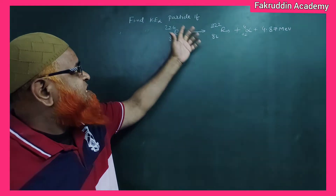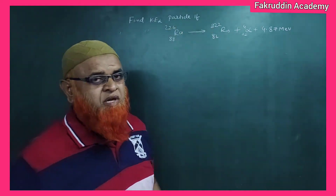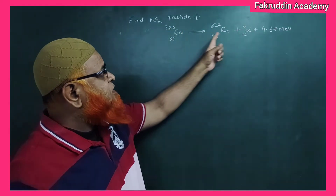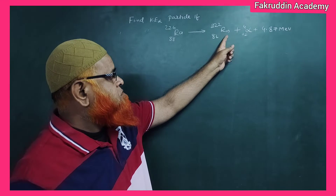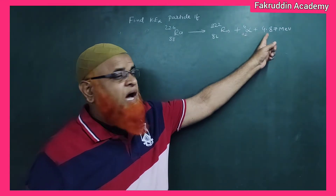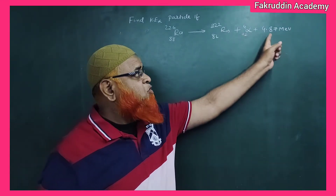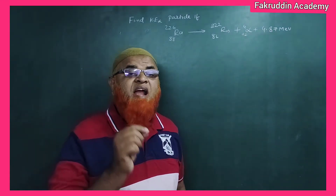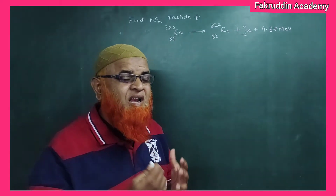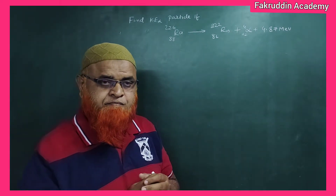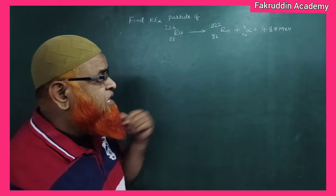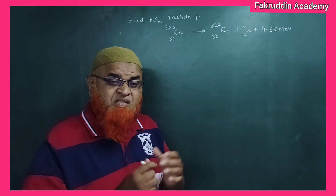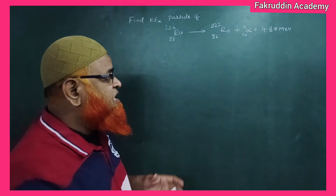How to solve this problem? When radium is converted into radon, an alpha particle is released along with a certain amount of heat energy — 4.87 million electron volts of heat energy is released. This process is called alpha decay.